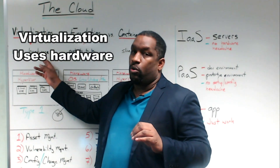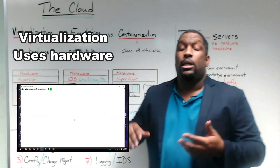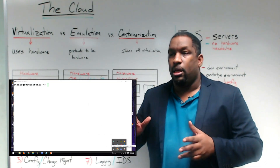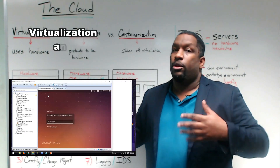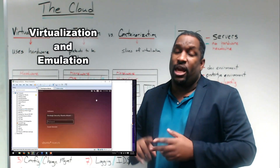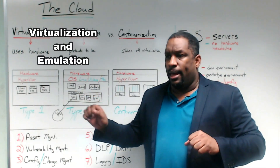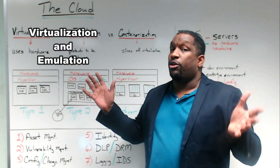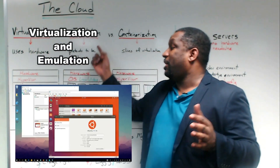Virtualization uses hardware. So when you start hearing the differences between VMware, Hyper-V, Virtual PC, and then things like QEMU where they're talking about emulation — QEMU, KVM versus Virtual PC, Hyper-V, VMware, Virtuozzo, Parallels — you're going to start hearing people talk about the argument between virtualization and emulation. With virtualization, it actually carves off a little piece of the hardware and says, let me carve off this piece of hardware and run a virtual machine.